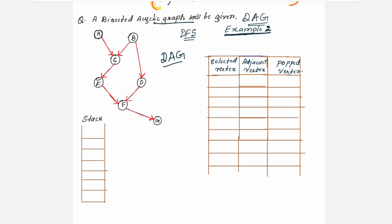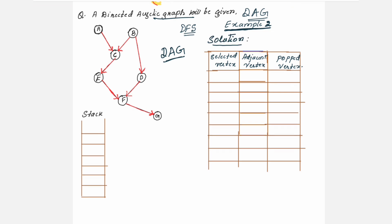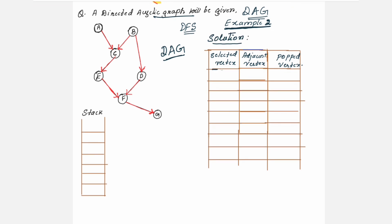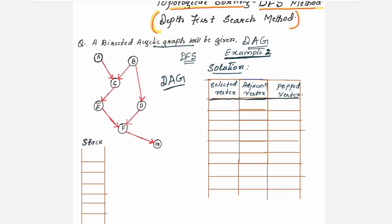The given graph will be a directed acyclic graph, and you are supposed to find the topological ordering for this given graph. For the solution, you can make three columns: selected vertex, adjacent vertex, and popped vertex, and keep one provision for the stack. We will start with any vertex — I will start from alphabetical order.